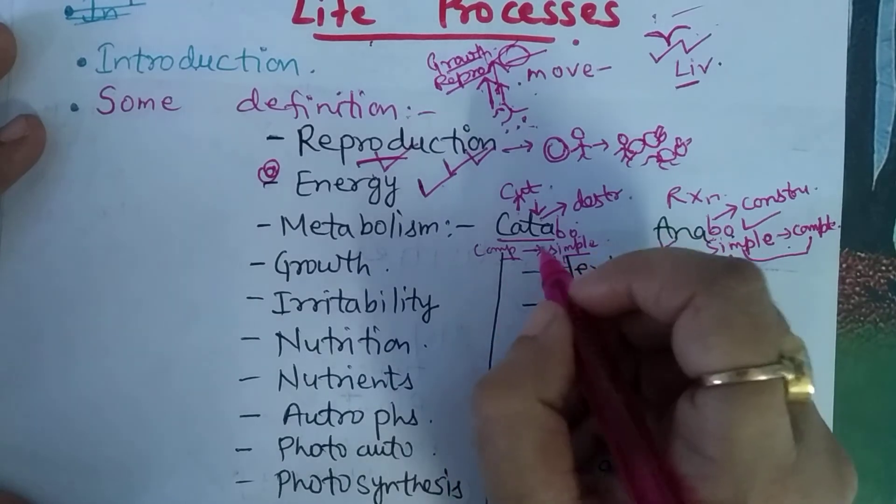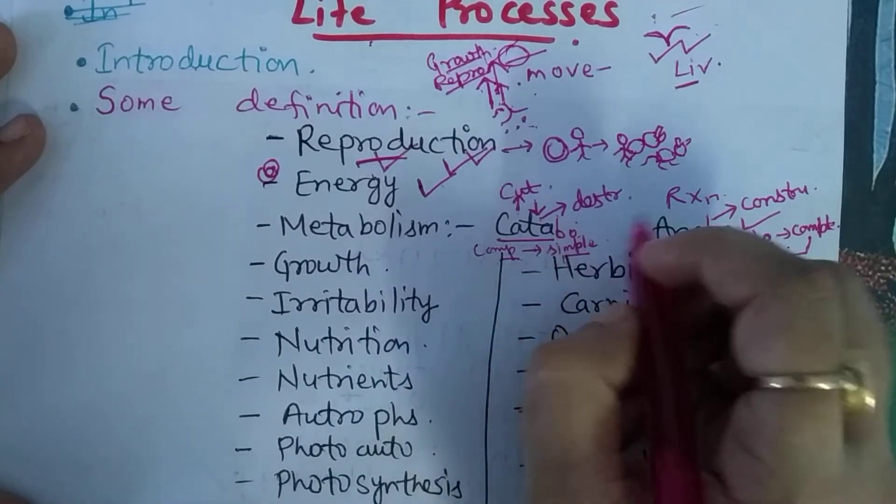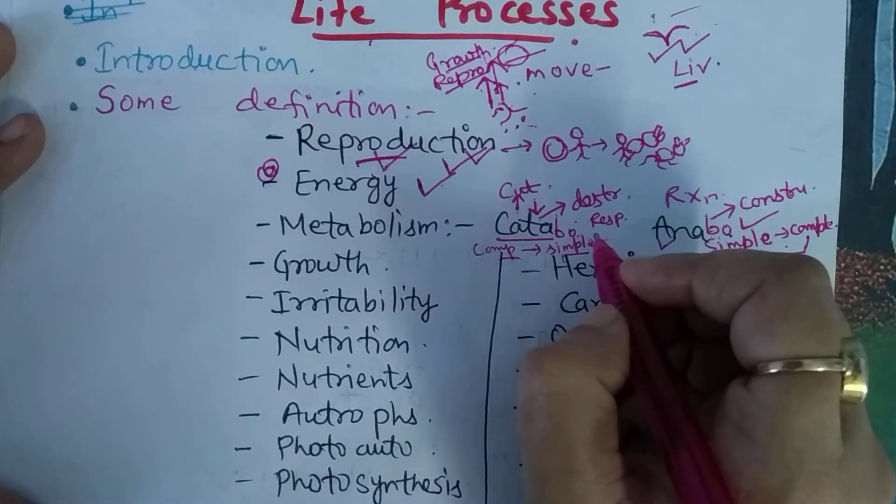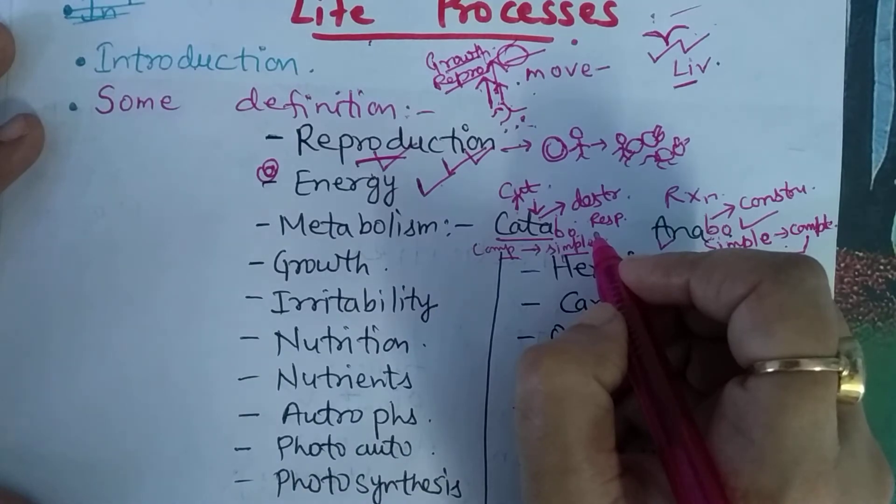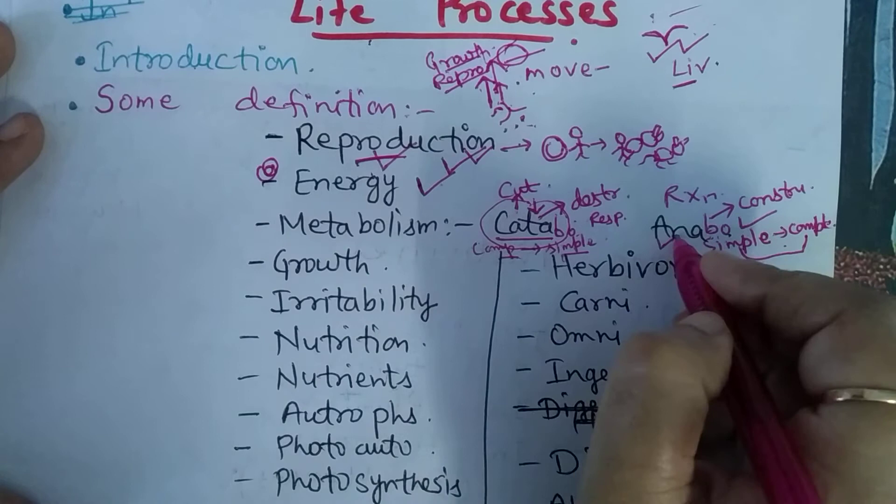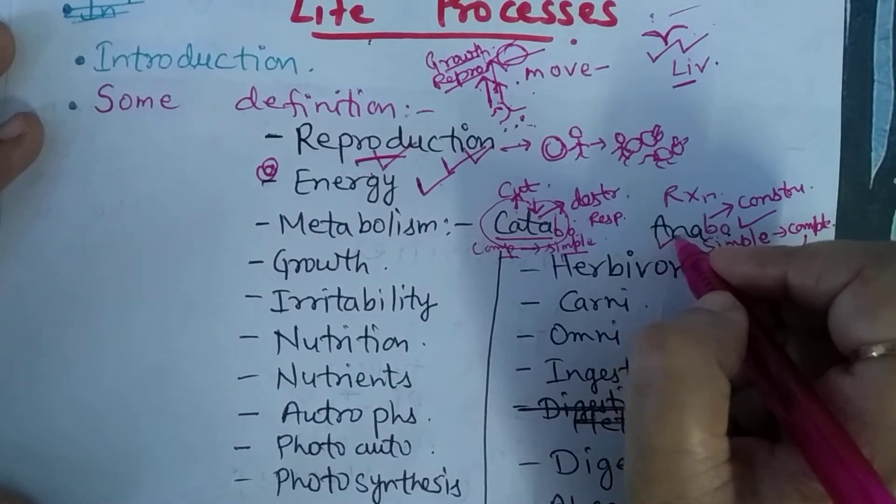I feel you understand and easily get this point. Now, examples of catabolism are: respiration, glycolysis, TCA cycle - all these are catabolism. In anabolism comes photosynthesis and protein synthesis. These two are anabolism. We are synthesizing something, not breaking it - we are constructing.